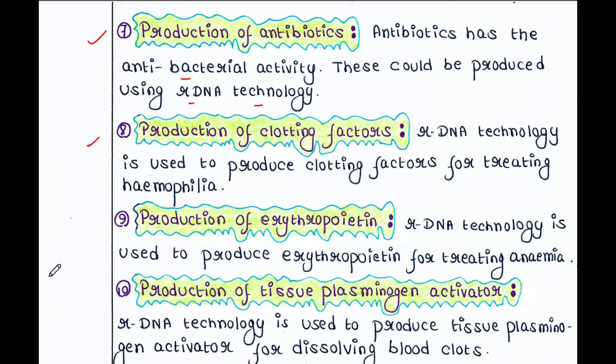Next is production of clotting factors. rDNA technology is used to produce clotting factors for treating hemophilia. A person suffering from hemophilia will lack certain clotting factors in their body, and we can treat them by providing the specific clotting factor they are lacking, produced using rDNA technology.